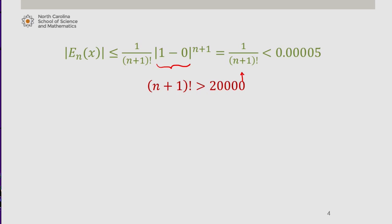We find that since 6 plus 1 factorial is equal to 5040, and 7 plus 1 factorial is 40,320, we need, at a minimum, a 7th degree Taylor polynomial to approximate the actual value of sine of 1 with less than a 0.00005 error.